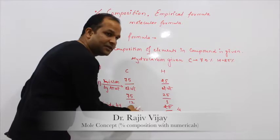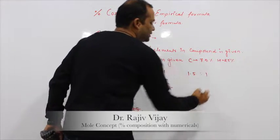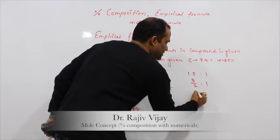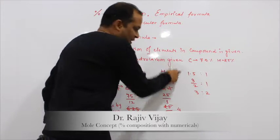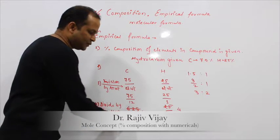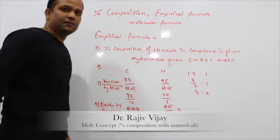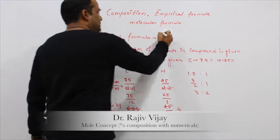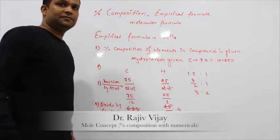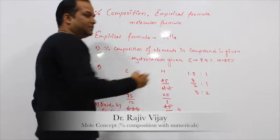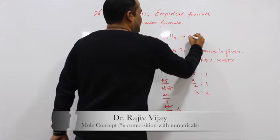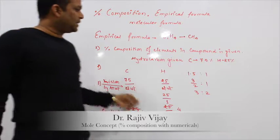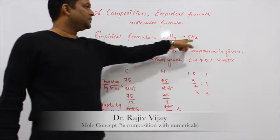For example, suppose here is 1.5 — so what do you do? 1.5 is to 1, which is 3/2 is to 1, so 3 is to 1. Means if it is in fraction, convert it into whole numbers. So here we get 1 and 4, and 1 and 4 are the subscript numbers, so we can directly write it as C1H4. The empirical formula of this hydrocarbon is C1H4.